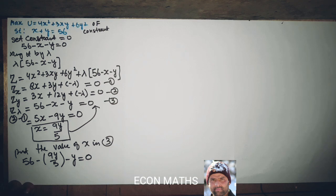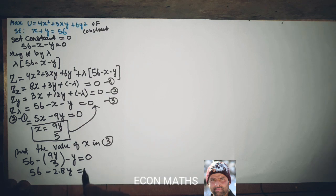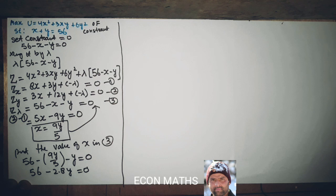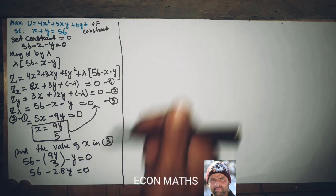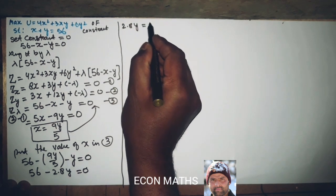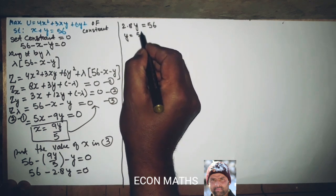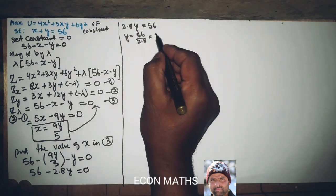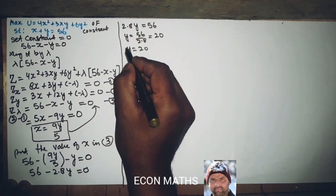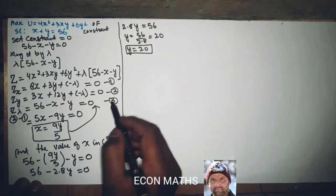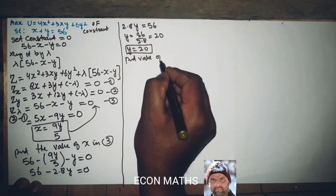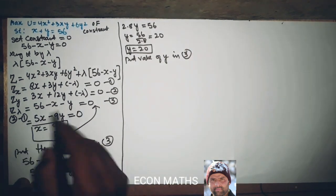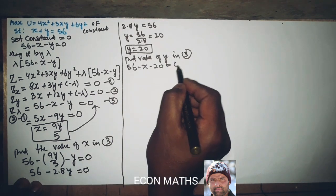Solving this — skipping some steps due to space — this becomes 56 minus 2.8y equals zero, so 2.8y equals 56, giving y equals 56 divided by 2.8, which is y equals 20. Now we put the value of y into equation three: 56 minus x minus 20 equals zero.